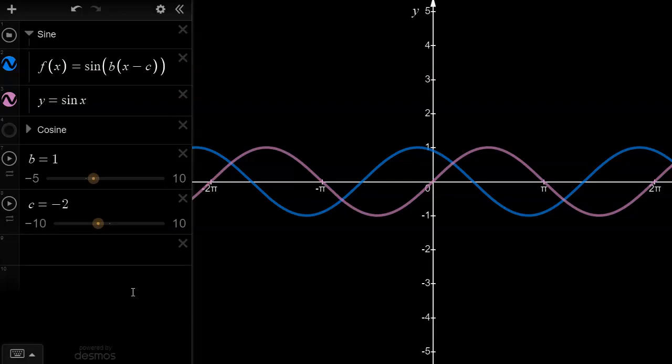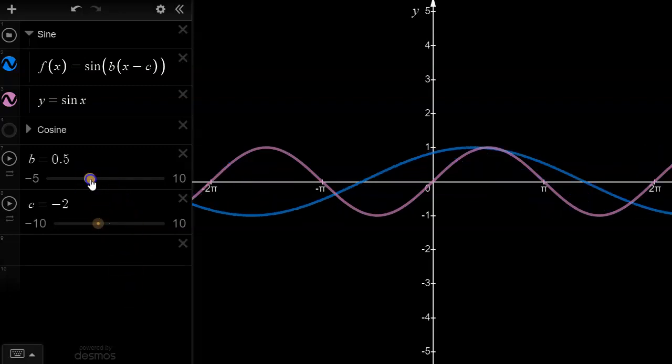One thing also to note is that any way you slice the b and c values, the domain of a sinusoidal function will always consist of all the real numbers. Although, I guess there's one exception. If b is equal to 0, then yes, you do have a domain that's all the reals, but you don't have a sinusoidal function anymore because it's just a flat line.